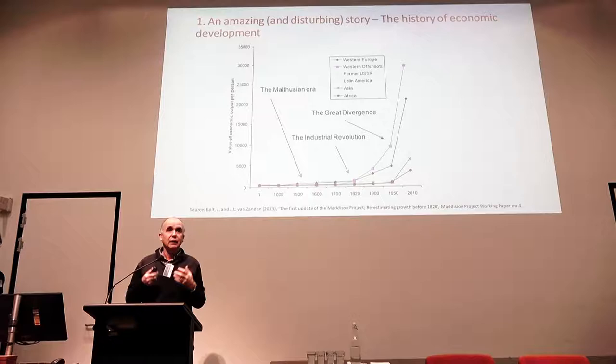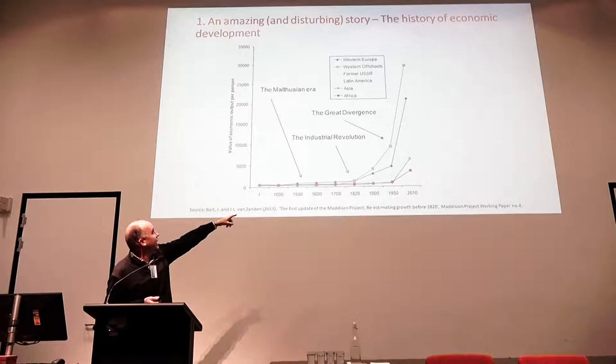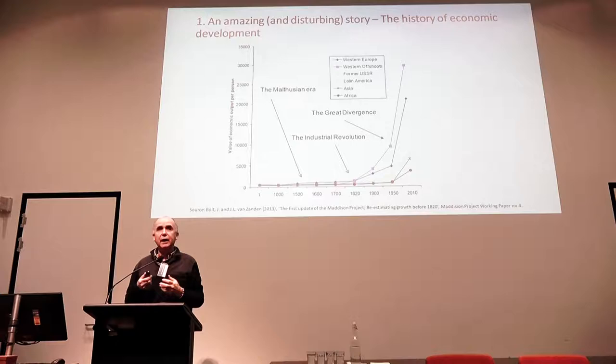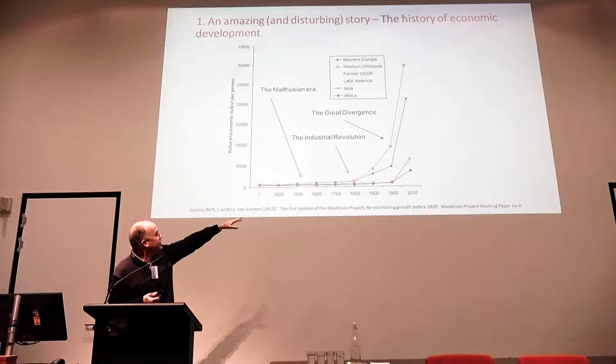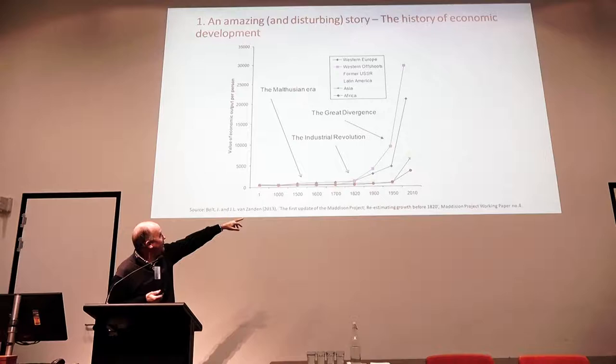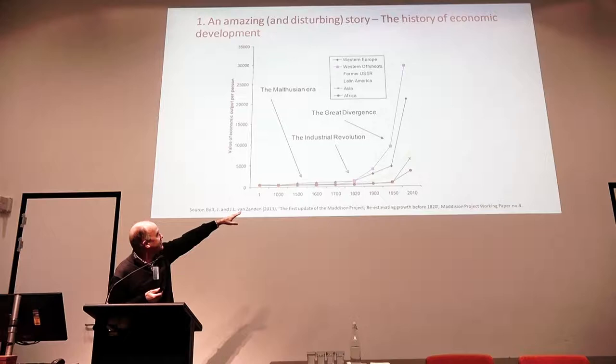The persistent application of new technologies in production allowed initially countries in Western Europe and also the Western offshoots — the US, Canada, Australia and New Zealand — to see material standards of living start to grow at a much more rapid rate than had been occurring for the last 1,750 years. So by 1820 you can see that the purple line and the diamond have started to move above the other regions of the world, and by 1900 that's happening to an even greater degree.